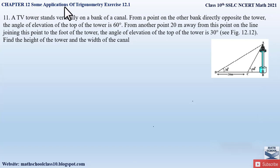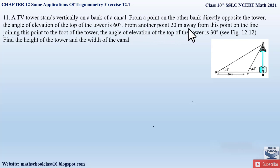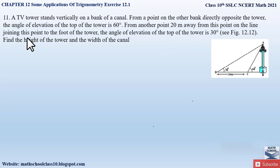Question number 11 from exercise 12.1, chapter 12, Some Applications of Trigonometry says: A TV tower stands vertically on a bank of a canal. From a point on the other bank directly opposite the tower, the angle of elevation of the top of the tower is 60°. From another point 20 meters away from this point on the line joining this point to the foot of the tower, the angle of elevation of the tower is 30°. A figure is also given. Find the height of the tower and width of the canal.